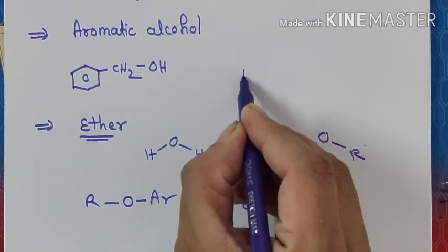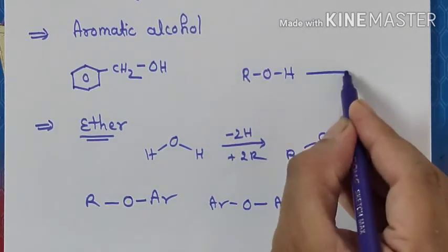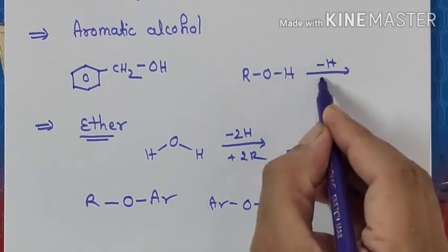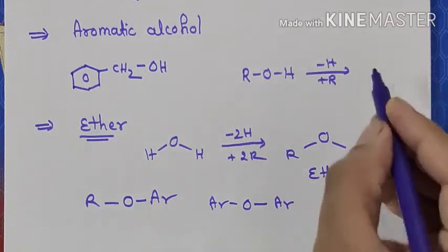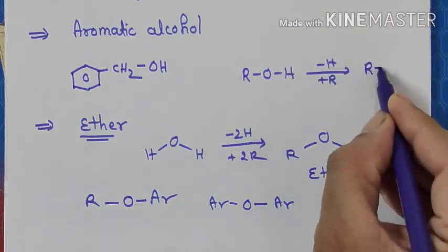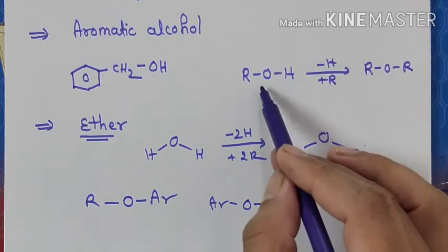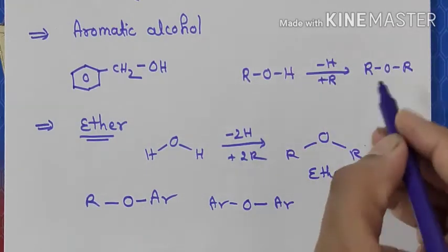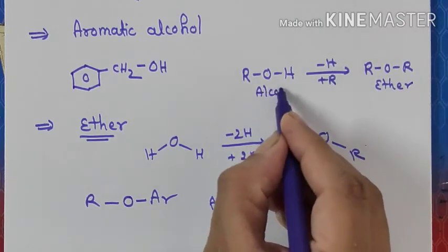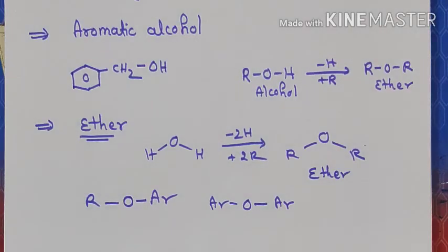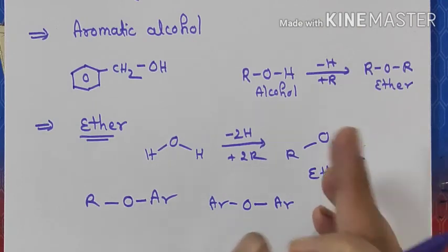How is ether a derivative of alcohol? Suppose I take alcohol ROH, and this H is replaced by an alkyl group or aryl group. The product obtained will be ROR. So ether is made from alcohol — that means ether is a derivative of alcohol. It is an alkyl derivative of alcohol.